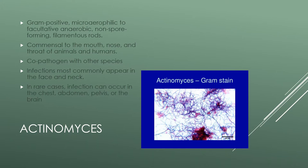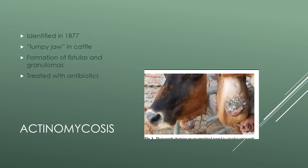Actinomyces infections have also been associated with infections in the face and neck, and in some rare cases the chest, abdomen, pelvis, or brain. Actinomycosis is a bacterial infection and not a fungal infection — that stems from its appearance under the microscope and its mistaken identity as fungi. In 1877, Actinomyces bovis was identified as causing lumpy jaw syndrome in cattle, manifesting as a destruction of the jaw bones and adjacent soft tissues.